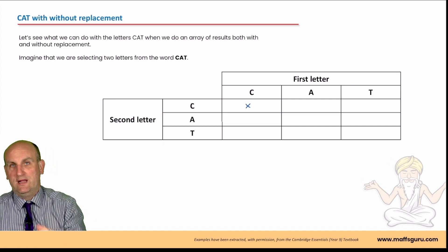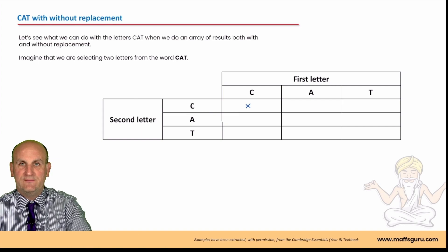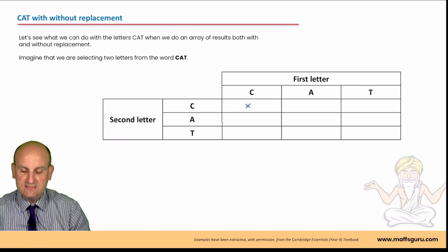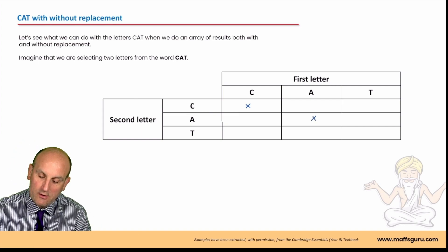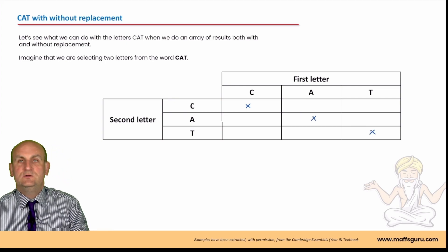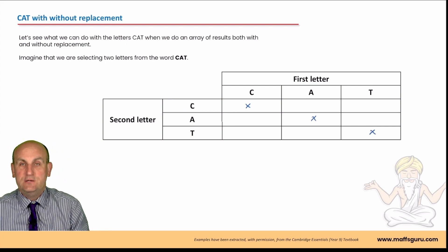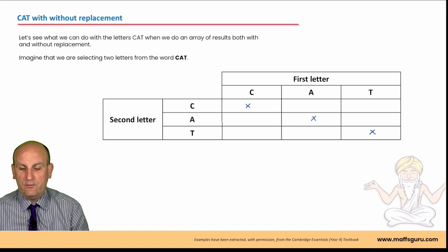And in fact, anywhere there are two letters the same, I'm not going to be able to do it. Because having taken out the A, there's not a second A. So, that's going to be a cross and that's going to be a cross. In that situation, all of the diagonals across, it's not possible without replacement.